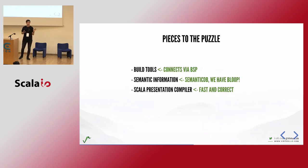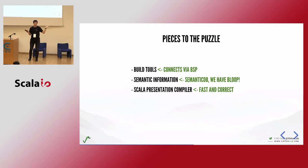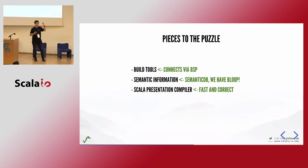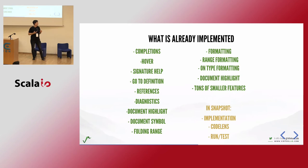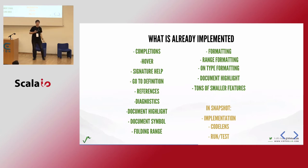Those are the three main components of what makes Metals tick: build tools generating Bloop configuration, semantic information from SemanticDB, and the Scala presentation compiler which is fast and correct — restarted whenever there are issues. All the green features shown are implemented and working as LSP features you can check on the specification website. There are also upcoming features already available in the snapshot: go-to-implementation, code lenses, run and test.